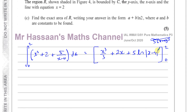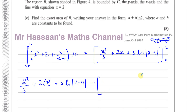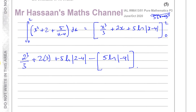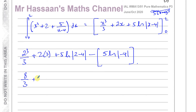Now we substitute 2 and then 0. Don't forget the modulus — it's very important because it will affect your answer. The modulus tells us to take only the magnitude, ignoring the negative sign. So we get 2 cubed over 3 plus 2 times 2 plus 5 times the ln of the modulus of 2 minus 4, minus 5 times the ln of the modulus of minus 4. That gives 8 over 3 plus 4 plus 5 times ln 2 — because the magnitude of minus 2 is 2.